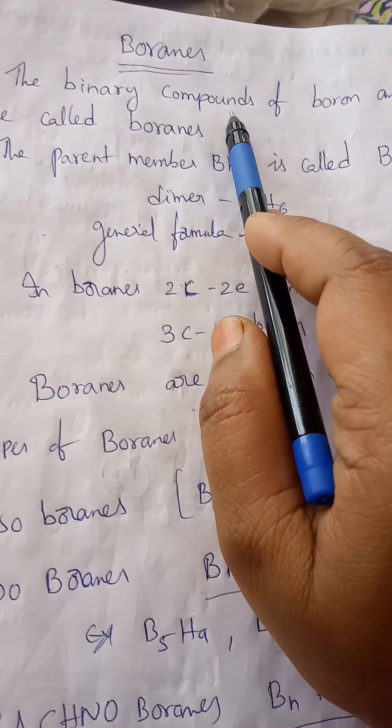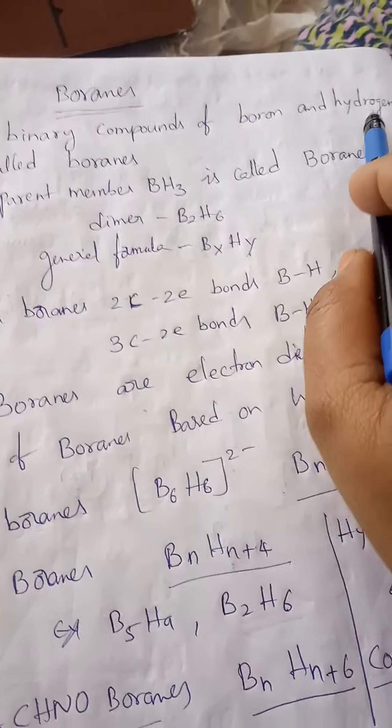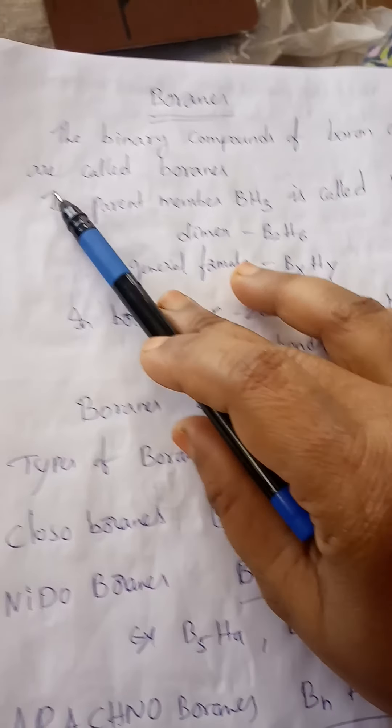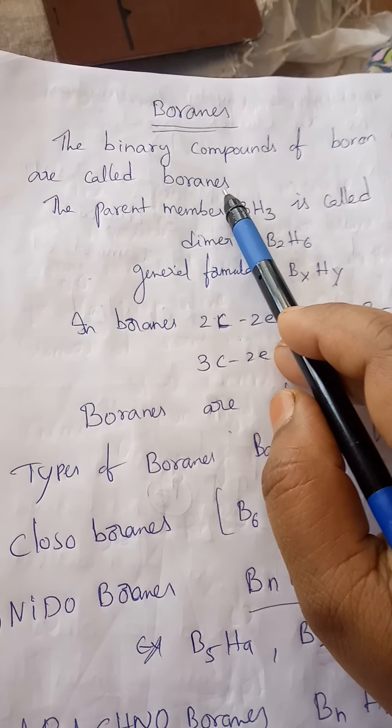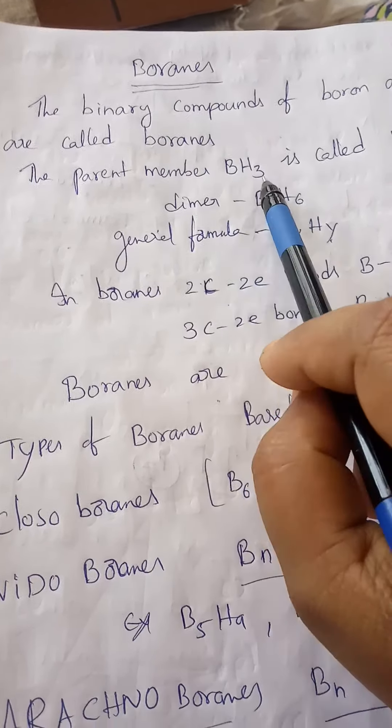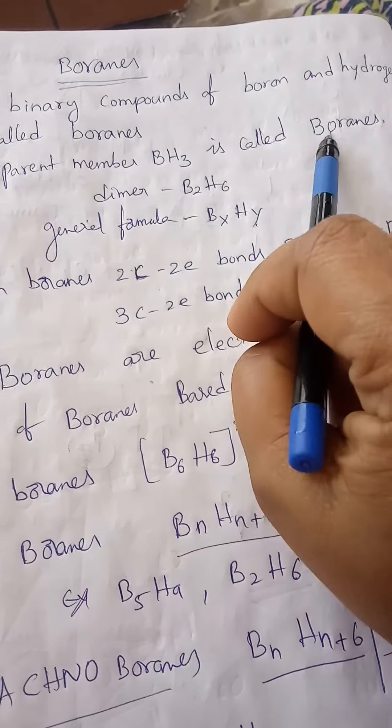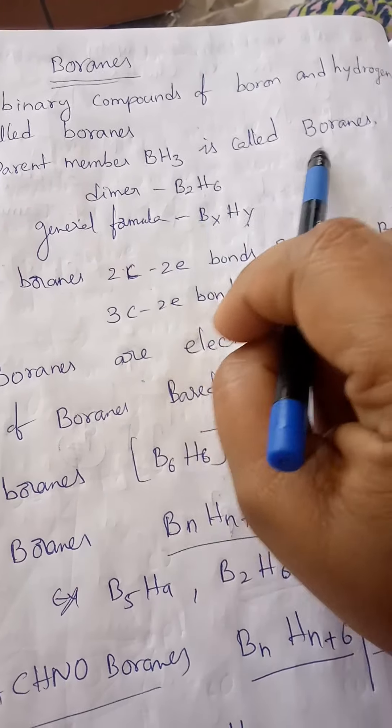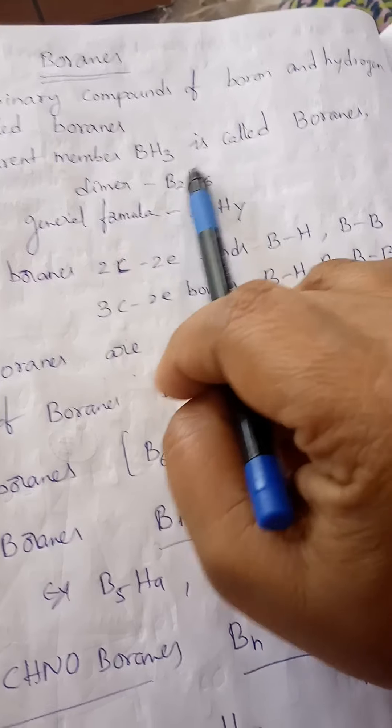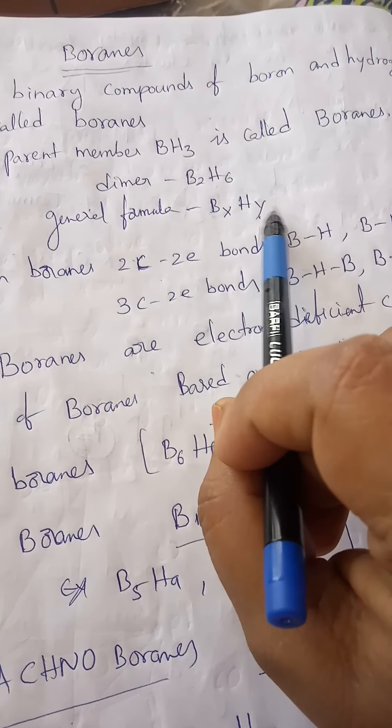Boranes are the binary compounds of boron and hydrogen. The parent member BH3 is well known as borane, and in its dimeric form it is called diborane. The general formula is BxHy.